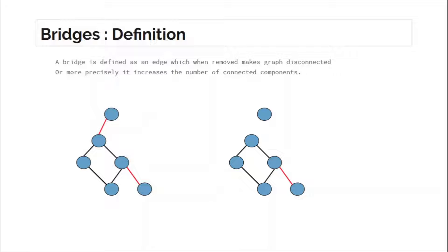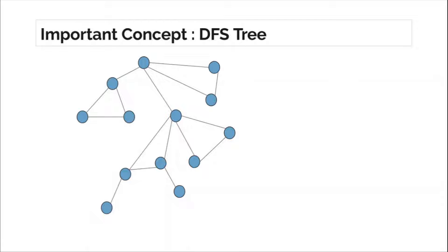Most tutorials directly jump into the implementation or explanation of in and out time and how to find bridges. But before we move to finding bridges, there is an important concept we must know. This concept is not just going to help us understand finding bridges but also understanding the algorithm to find articulation points. In fact, using this concept, there are problems on Codeforces rated 2400 and above which can be solved easily.